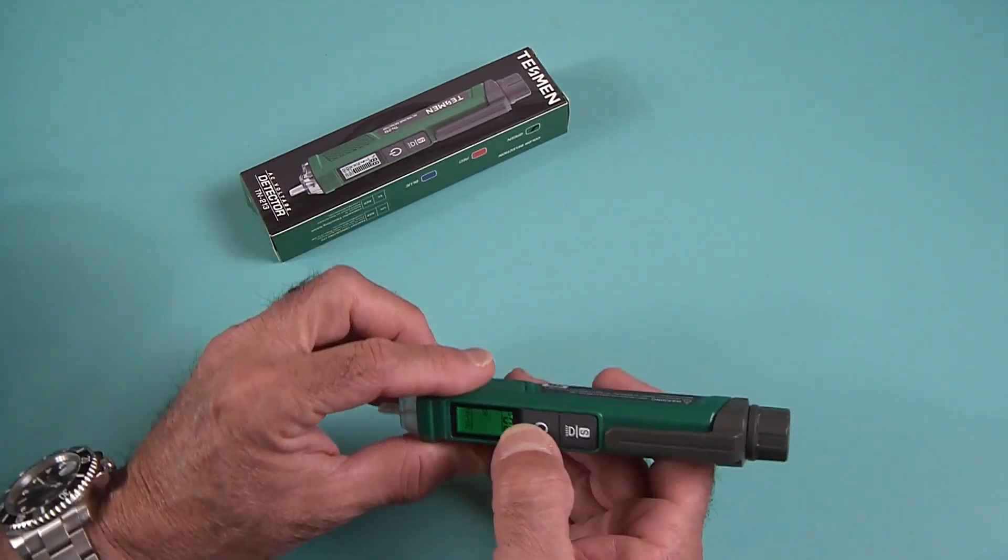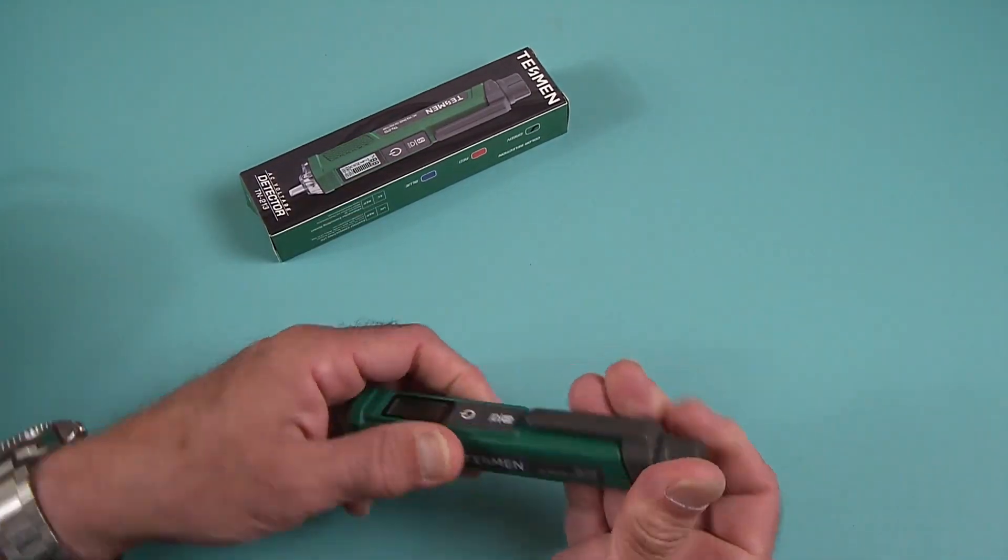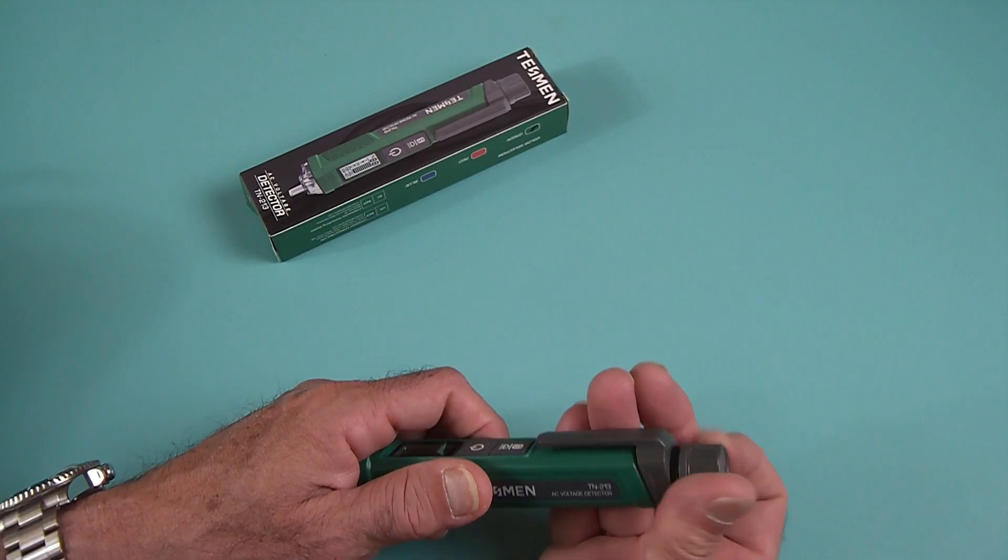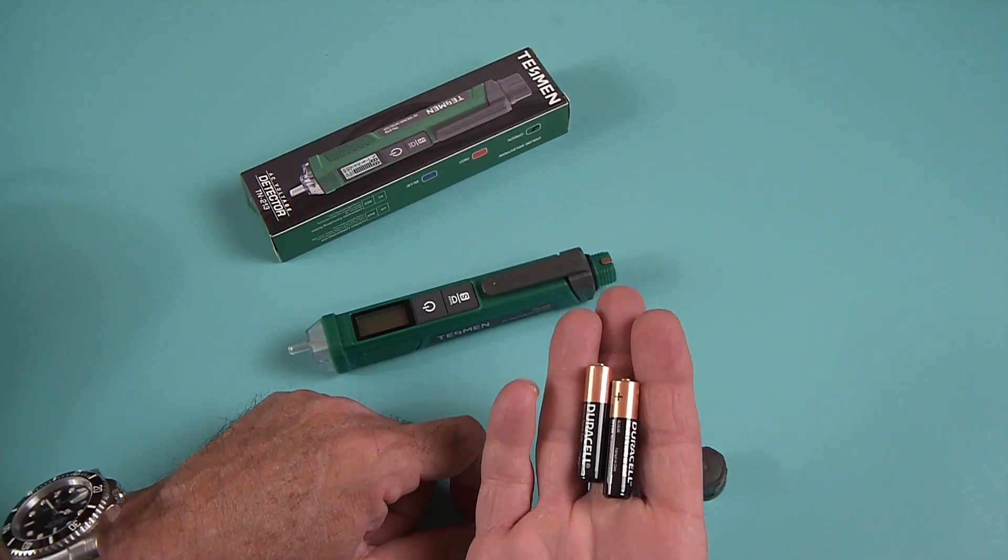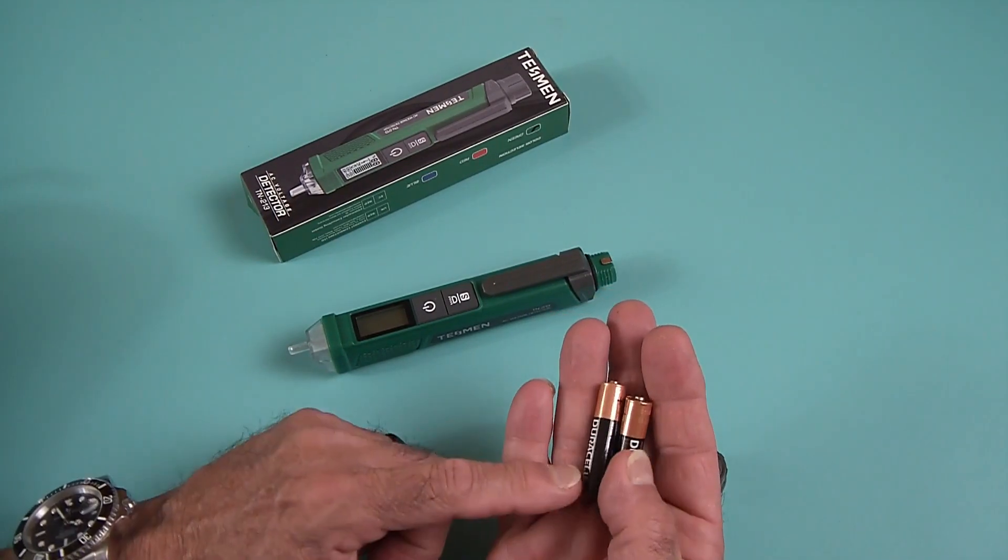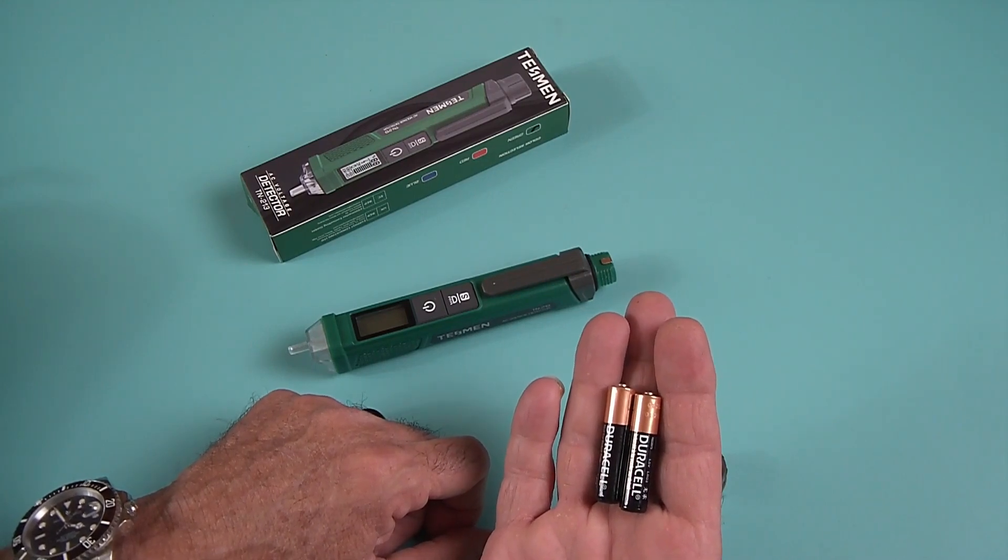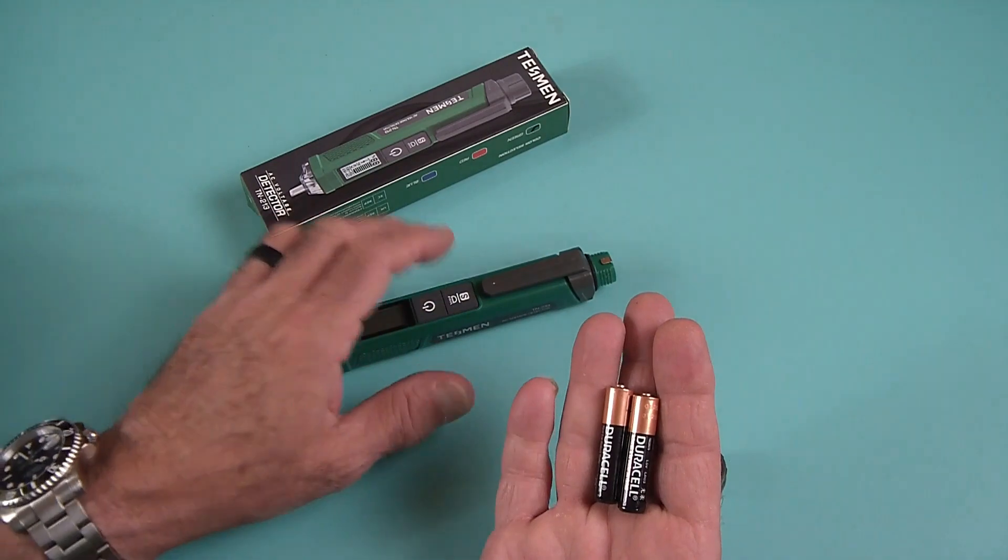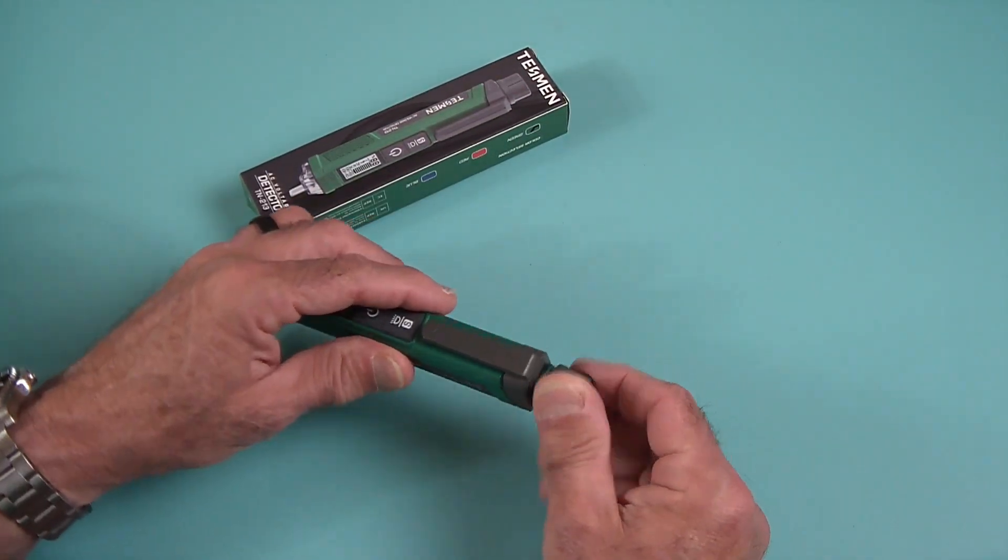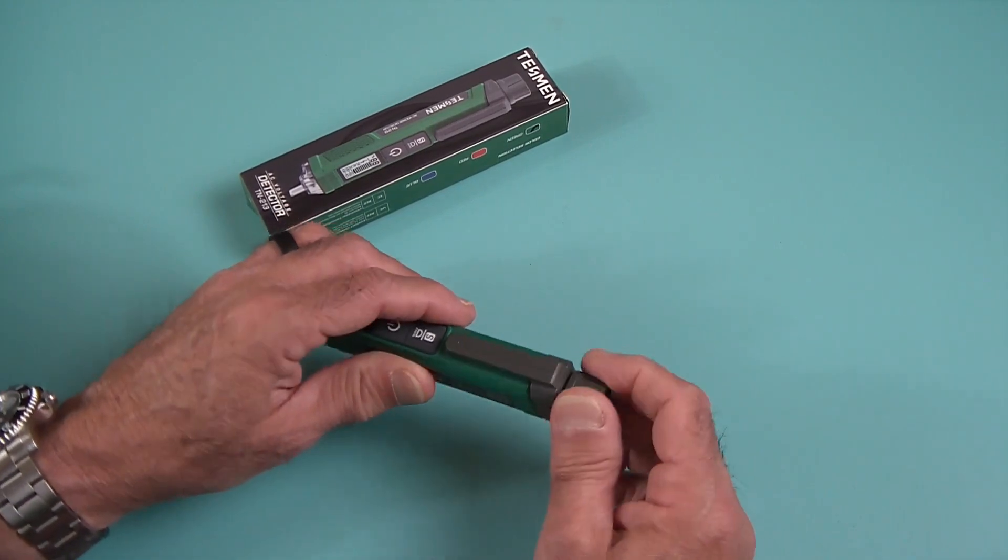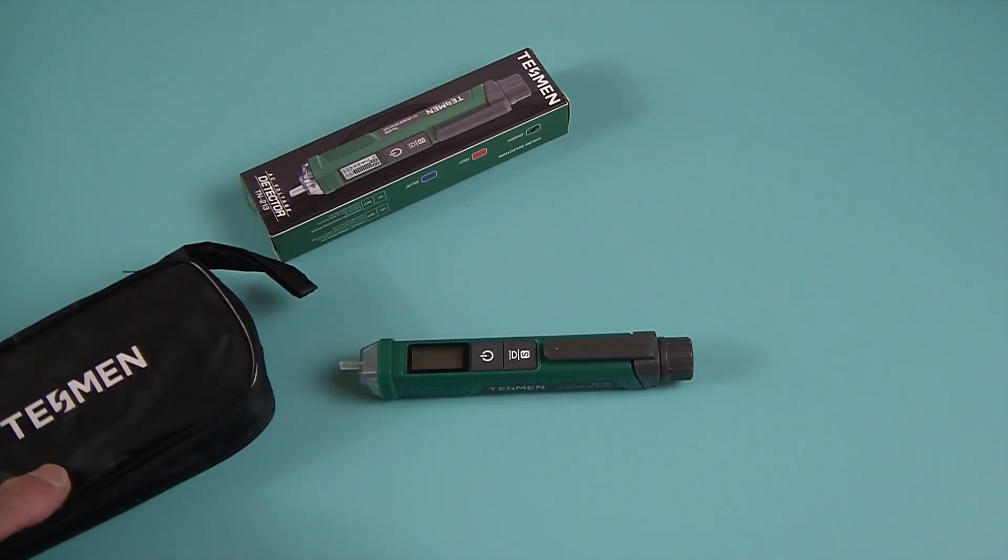Now one thing that always impresses me about Tesman, it did last time on the multimeter and it does on this, this unit comes with batteries included and best part of it is Tesman is not throwing some of those cheap zinc batteries in it, they're actually putting Duracell alkaline batteries in their units and those come free so as soon as you open the package you take it out it's ready to use. That's a nice little feature that I've liked about Tesman a lot of their equipment that come like that also come with those batteries.